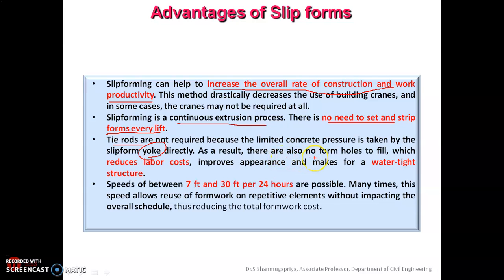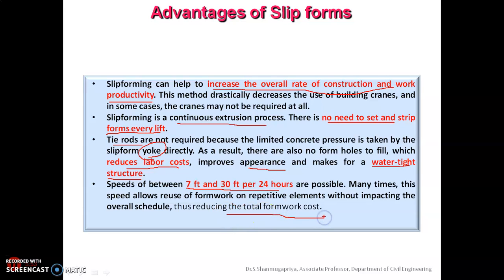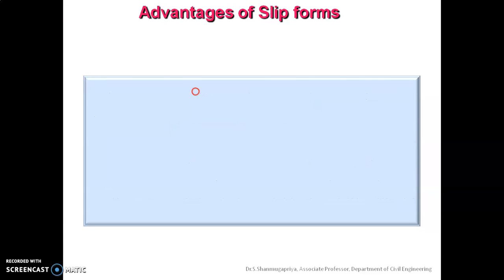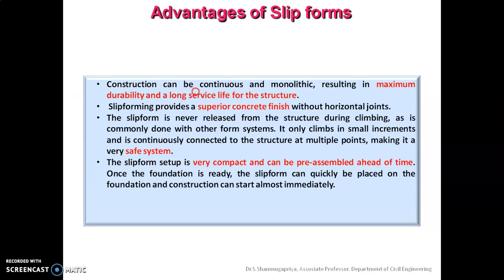There is no need for tie rods because the concrete pressure is taken directly by the yoke assembly, eliminating holes and reducing labor cost while improving the appearance and waterproofing of the structure. Speeds of around 7 to 30 feet per 24 hours are possible, allowing reuse of formwork on repetitive elements and reducing total formwork cost.